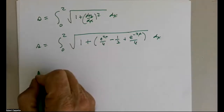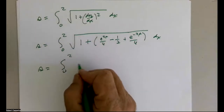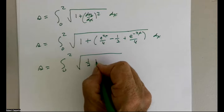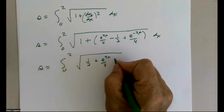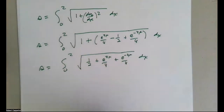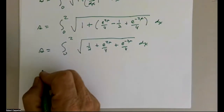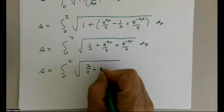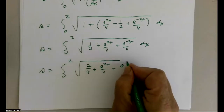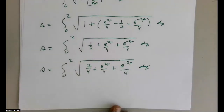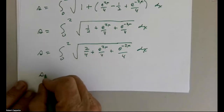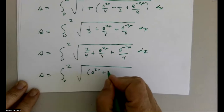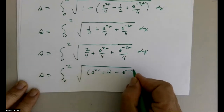This is where the magic happens. We have the integral from 0 to 2 of the square root of one half plus e to the 2x over 4 plus e to the negative 2x over 4, dx. Getting a common denominator of 4: that becomes the integral from 0 to 2 of the square root of (e to the 2x plus 2 plus e to the negative 2x) all over 4, dx.